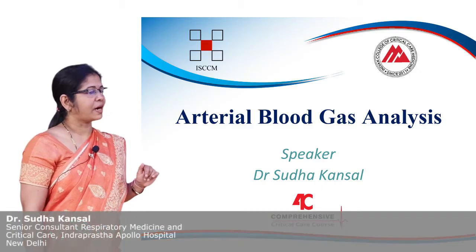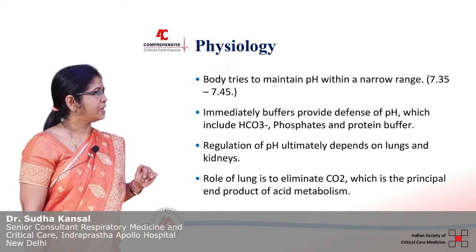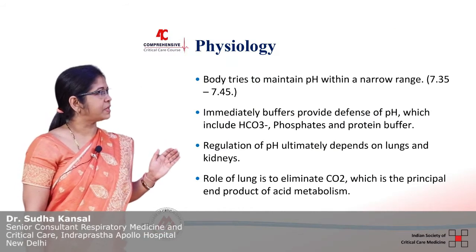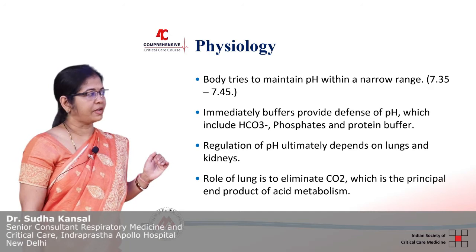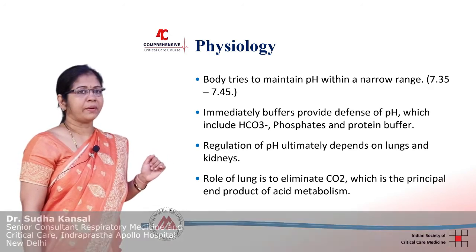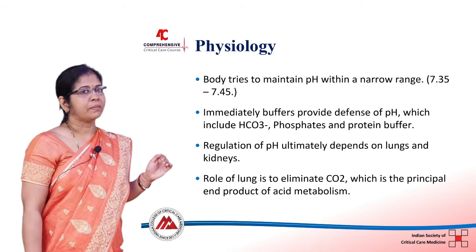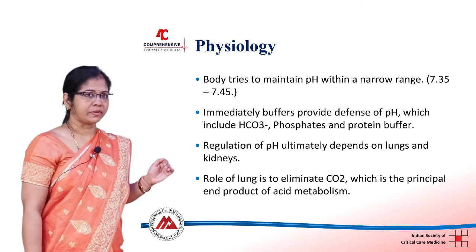I am going to talk on arterial blood gas analysis. Body tries to maintain pH within a normal range of 7.35 to 7.45. Immediate buffers provide defense of pH, which include bicarbonate, phosphate, and protein buffer.